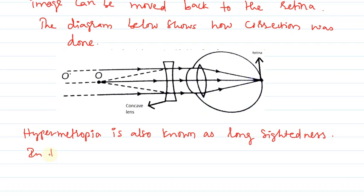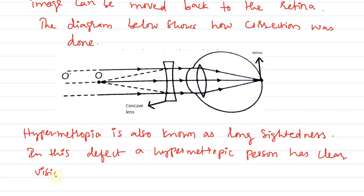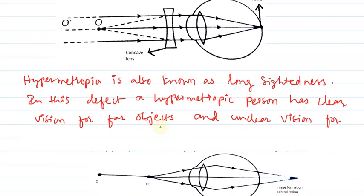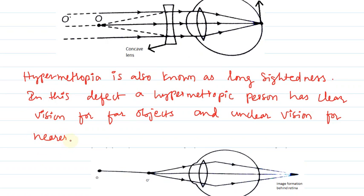In this defect, a hypermetropic person has clear vision for far objects and unclear vision for nearer objects.